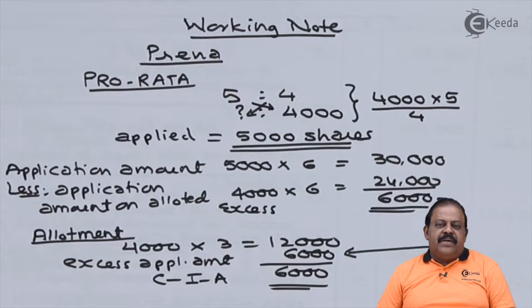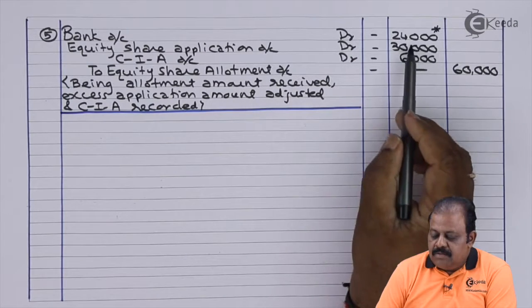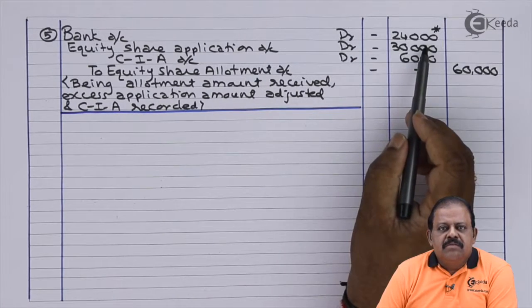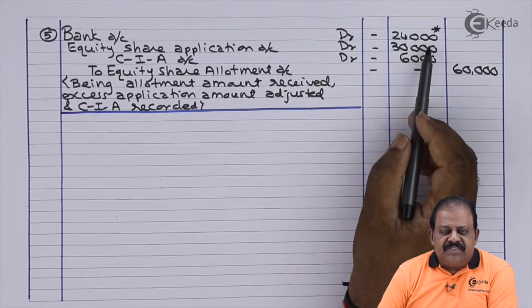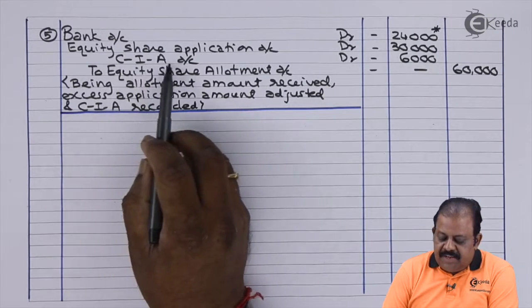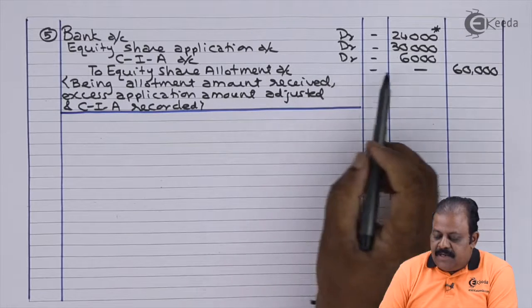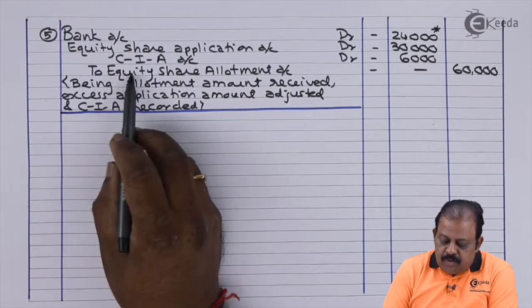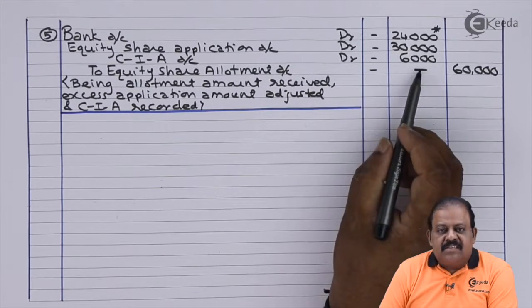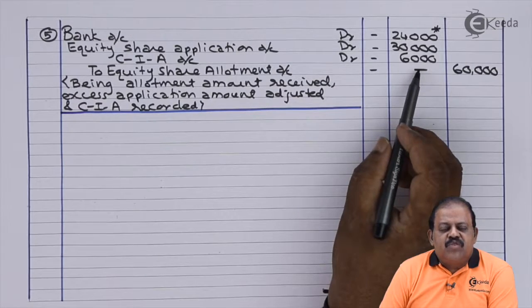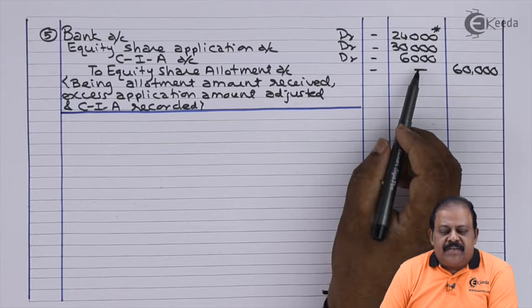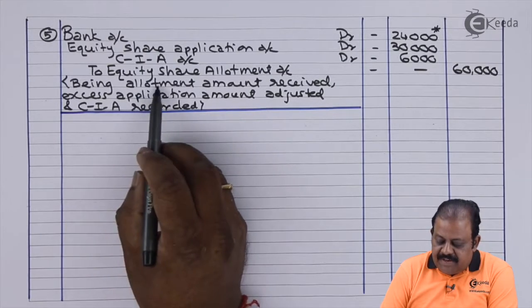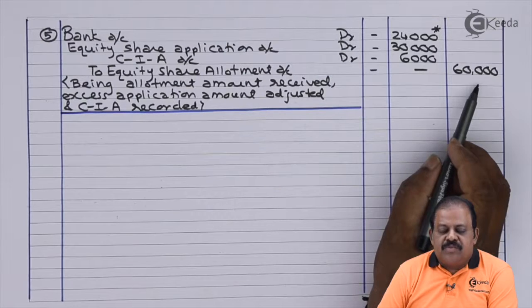Entry 5 — allotment amount received: Bank Account Dr ₹24,000 (amount received), Equity Share Application Account Dr ₹30,000 (excess application adjusted), Call in Arrears Account Dr ₹6,000 (Prerana's default) to Equity Share Allotment Account ₹60,000.